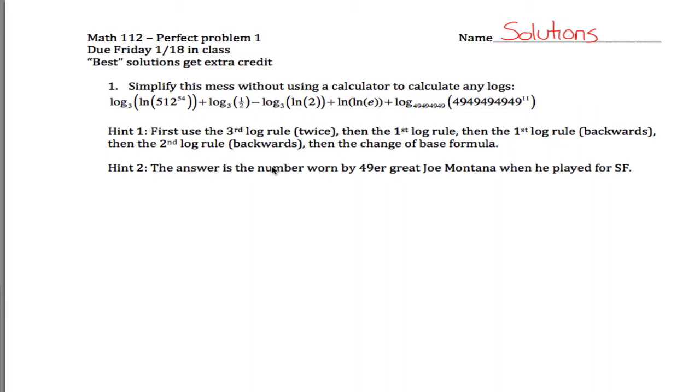See, the second hint is that the answer is the number worn by 49er great Joe Montana while he played for San Francisco. He wore 16 in San Francisco anyways, I think he was 19 in Kansas City.